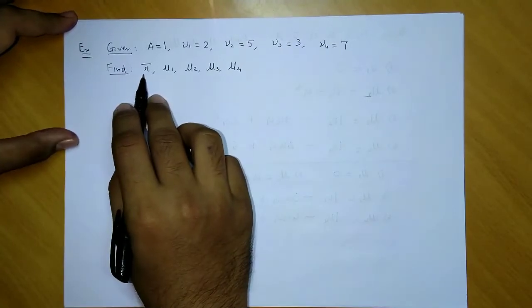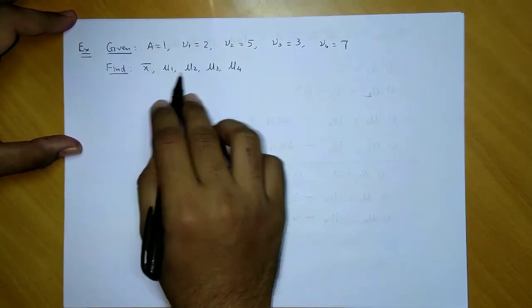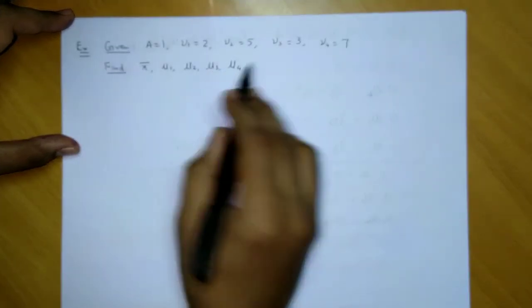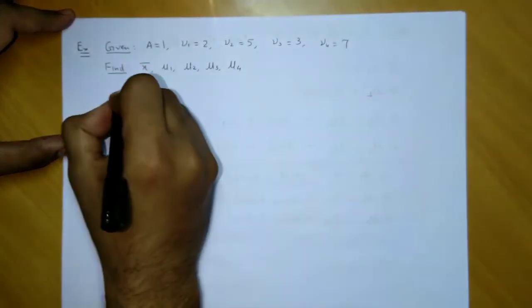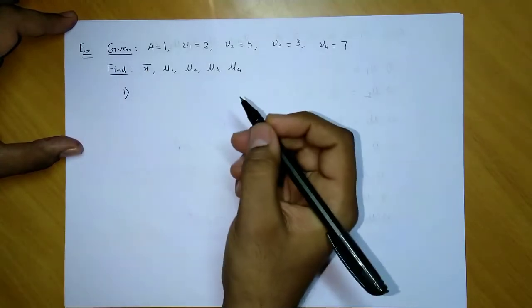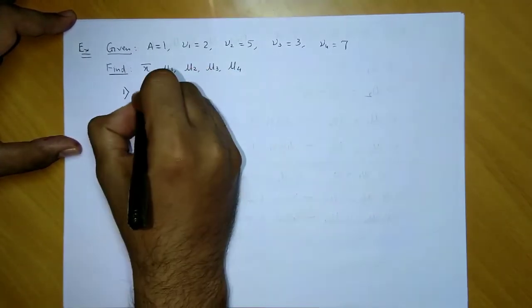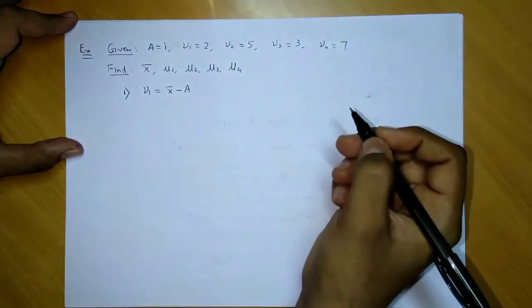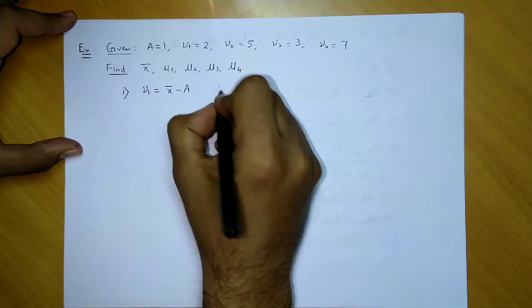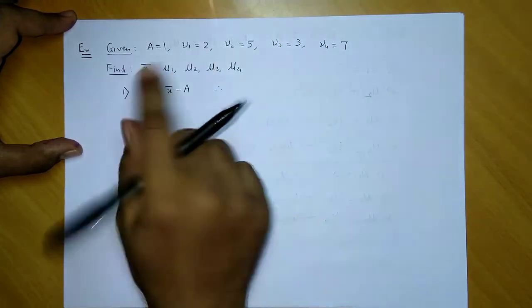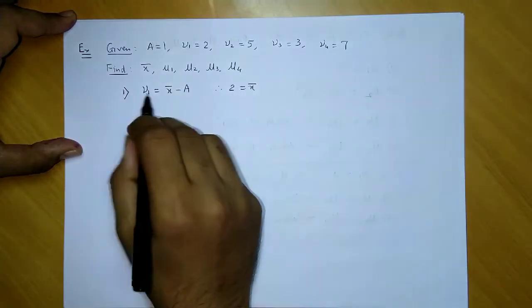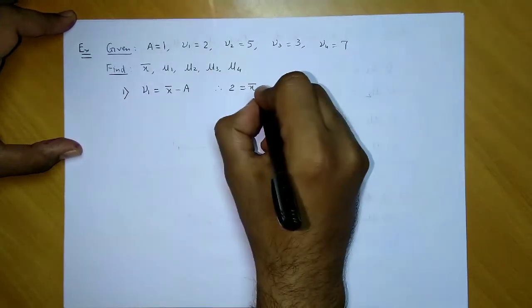We begin with the first one. Please remember this relation: v1 = x̄ - A. Therefore, v1 is given as 2, x̄ is not known, and A = 1.